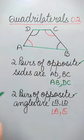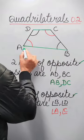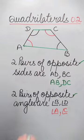So pairs of opposite sides are AD and BC, and the second pair is AB and DC. And what about opposite angles?